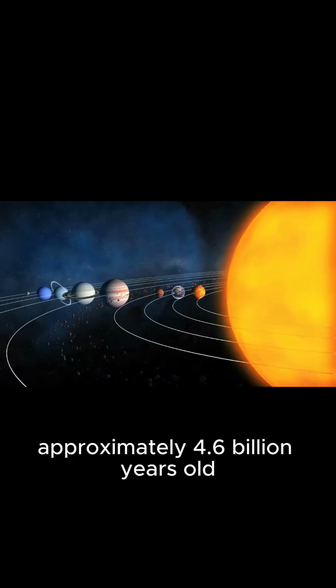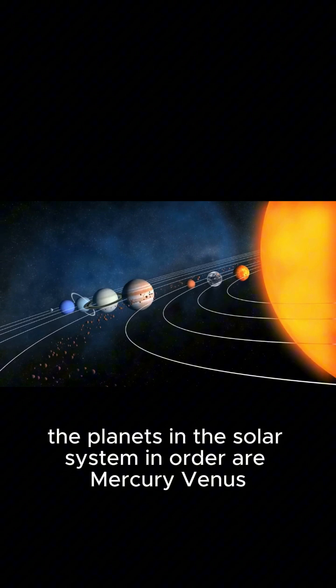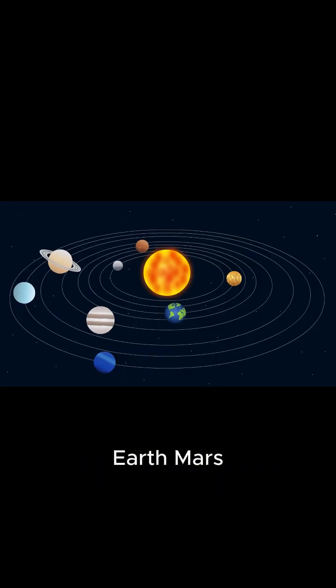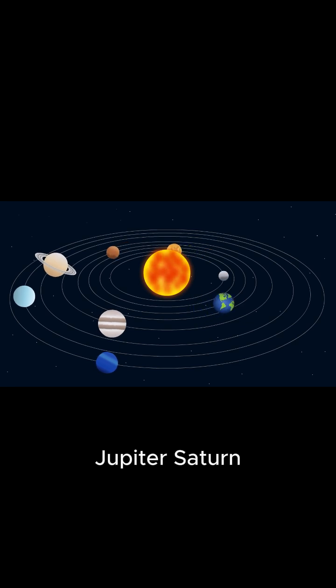The sun is approximately 4.6 billion years old. The planets in the solar system, in order, are Mercury, Venus, Earth, Mars, Jupiter, Saturn, Uranus, and Neptune.